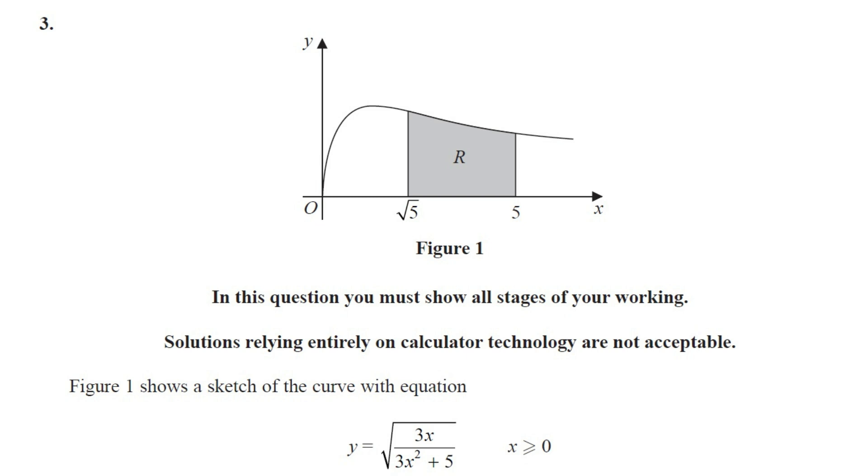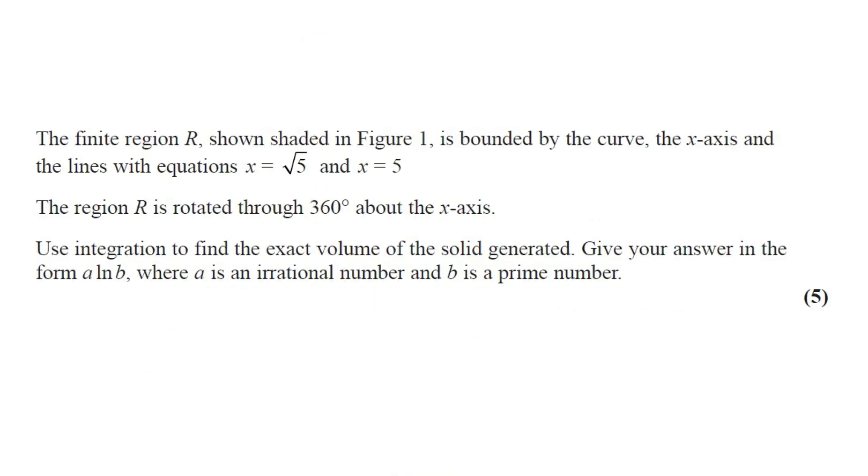Figure 1 shows a sketch of the curve with equation y equals square root of 3x over 3x squared plus 5. The finite region R shown shaded in figure 1 is bounded by the curve, the x-axis, and the lines with equation x equals square root of 5 and x equals 5.